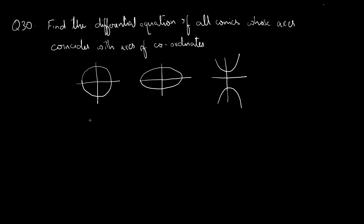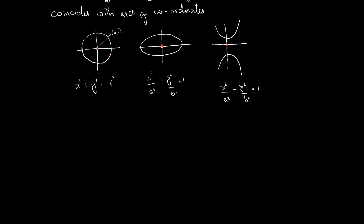These are the three conic sections which have two axes. When these conic sections have their axes coinciding with the axes of coordinates, their center point will be the origin. So the equations of these figures become: x² + y² = r², or x²/a² + y²/b² = 1, or x²/a² - y²/b² = 1.